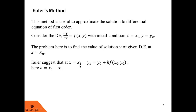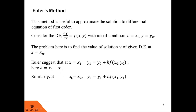Euler suggests we find the value of the solution at x = x1 first. To do so he gives the formula: y1 = y0 + h·f(x0, y0), where h is the step size. Then to calculate the value at x = x2, we use y2 = y1 + h·f(x1, y1). Notice the pattern: for y1 we evaluate f at (x0, y0), and for y2 we evaluate f at (x1, y1).